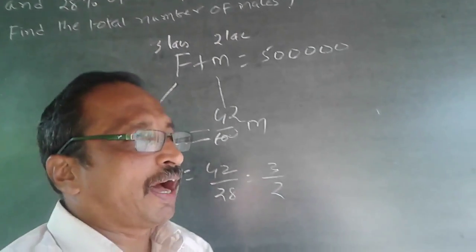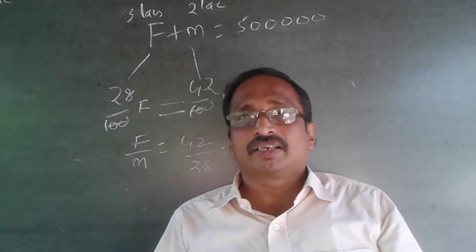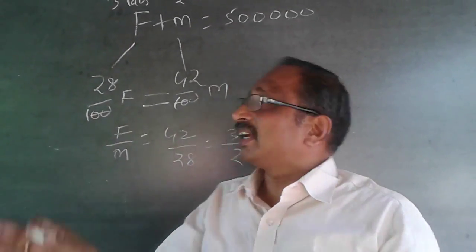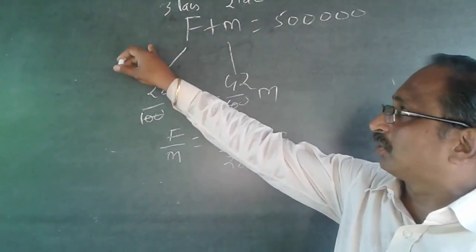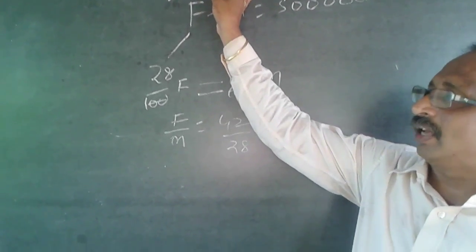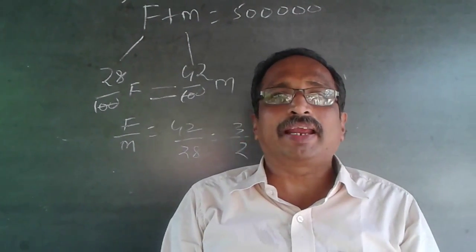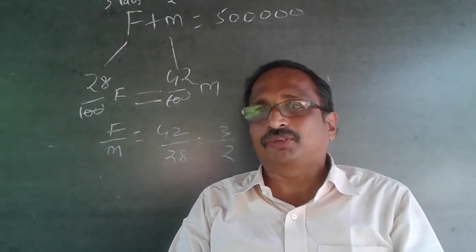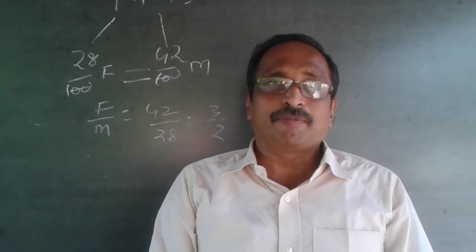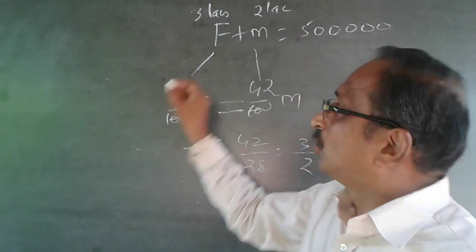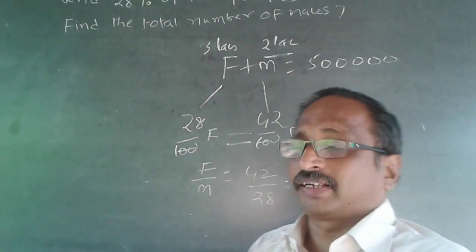The male population is being asked, so the answer is 2 lakhs. We can verify: 28% of 3 lakhs is 84,000, and 42% of 2 lakhs is also 84,000. Those 84,000 females are marrying 84,000 males in the same town. So the answer is 2 lakhs.